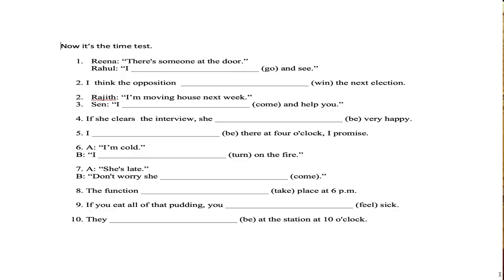That's all about future tense. Now this is the time for the test. Fill in the blank with the correct form to form simple future tense. One: there is someone at the door — I dash go and see. Two: I am moving house next week — I dash come and help you. Three: if she clears the interview, she dash be very happy. Four: I dash be there at 4 o'clock, I promise. Five: I am cold, I dash put on the fire. Six: she is late — don't worry, she dash come. Seven: the function dash take place at 6 p.m. Eight: if you eat all that pudding, you dash feel sick. Nine: they dash arrive at the station at 10 o'clock.